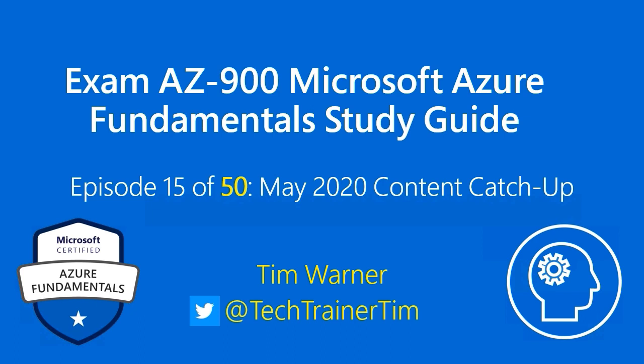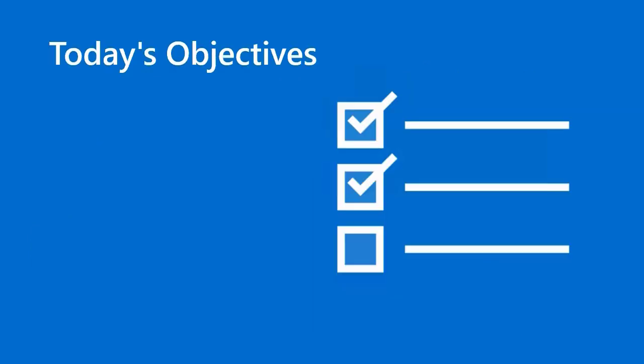If you've been following this series thus far, you're thinking: wait a minute, I thought we were episode X of 63 or something. That's the purpose of this episode - to bring you up to speed. Our objectives today are, first of all, to describe the 2020 AZ-900 objective domain changes.